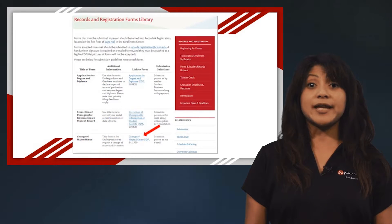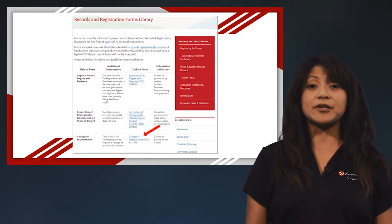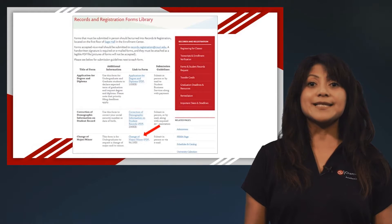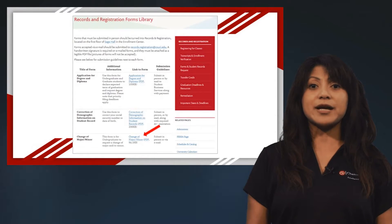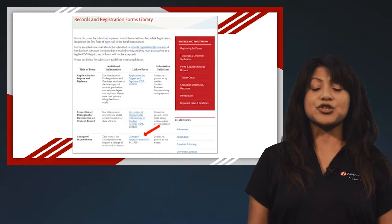Scroll down until you come across the form titled Change of Major Minor Form. Print and complete this form, then submit it to the Records and Registration Office in Sage Hall.